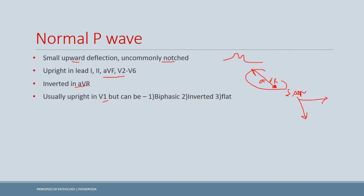The V1 lead P wave is usually upright, but it may sometimes be biphasic — again because the SA node is in the right atrium and there is a timing difference between right and left atrial depolarization. It can also occasionally be inverted or flat, though both of these are rare findings.